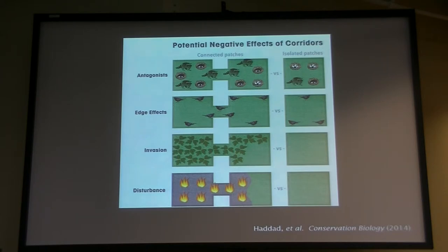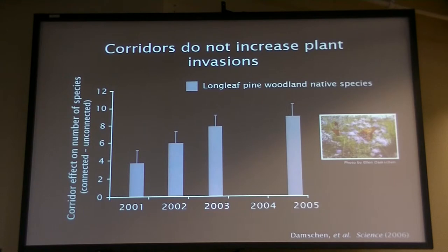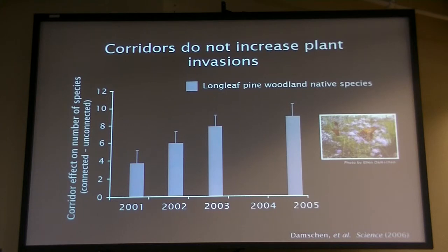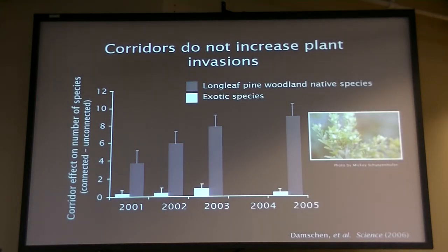I want to focus on two results from our corridor experiment. One comes back to plant diversity. I've taken the full dataset and extracted just the species of restoration interest in longleaf pine savannah. In the gray bars, we see a pattern similar to the overall: more species found in connected versus unconnected fragments. But if we look at invasive species rather than native species of restoration interest, we see no pattern — corridors don't seem to be sending invasive plants through the landscape. The point is that plants are either relatively immobile or so good at dispersal that they don't need corridors to get around.